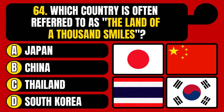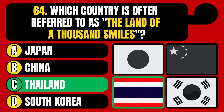Which country is often referred to as the land of a thousand smiles? Japan, China, Thailand, or South Korea? The correct answer is option C, Thailand.